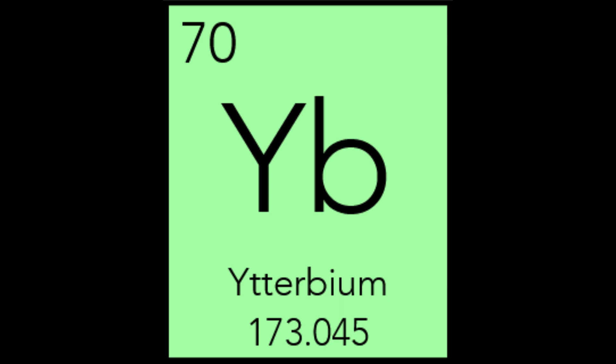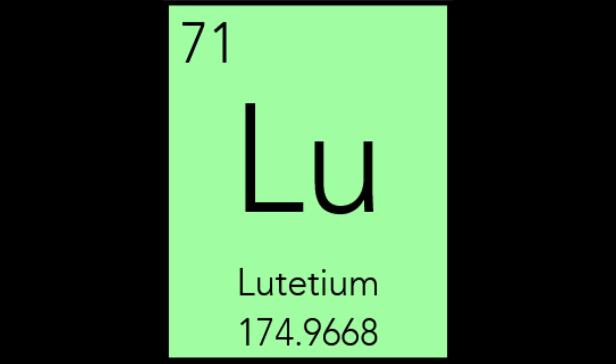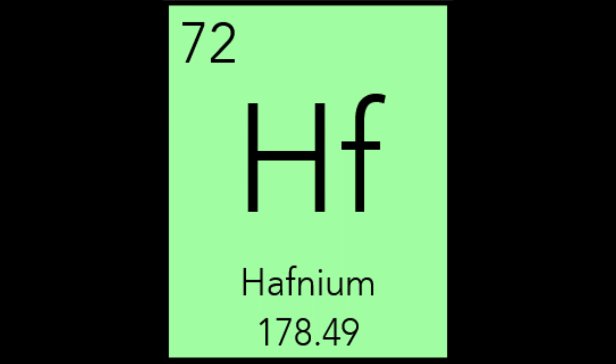Lutetium gets its name from the Latin Lutetia, which is the name for Paris, but actually means 'place of mud' in Gaulish. It was found as an impurity in ytterbia, and was proposed to be named, among other things, Neo-Ytterbium. Lutetium, Lu, is the last of the lanthanides and is used in petroleum cracking in refineries as a catalyst and in other industrial chemical processes. Hafnium, Hf, is derived from the Latin Hafnia, which means Copenhagen, the capital city of Denmark, where it was discovered. Hafnium was also predicted by Mendeleev and was the last stable element to be discovered. It is used in filaments, electrodes, and control rods in nuclear reactors, as well as some semiconductor fabrication processes.